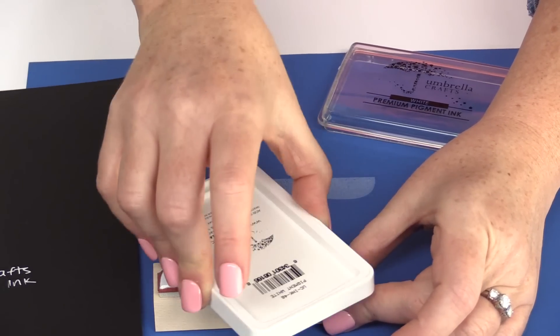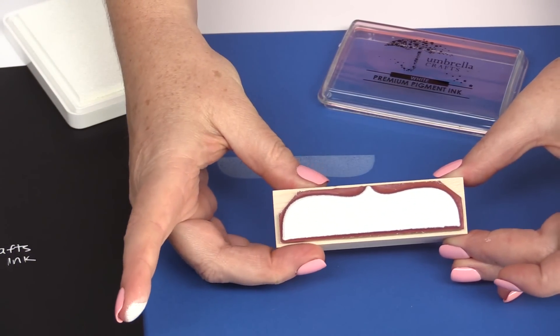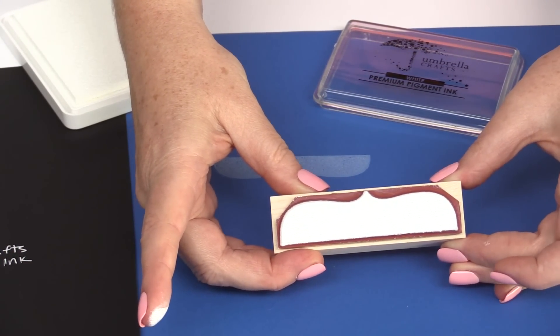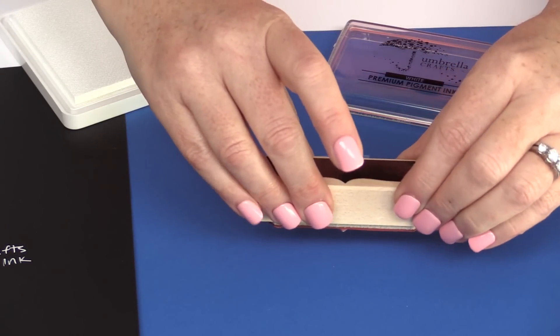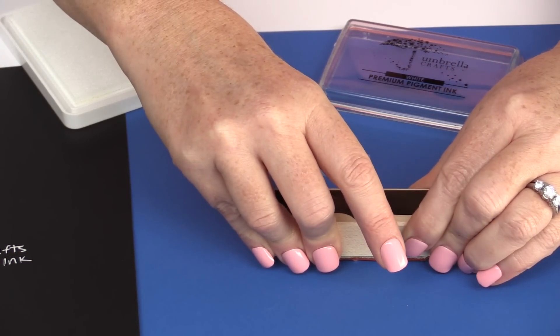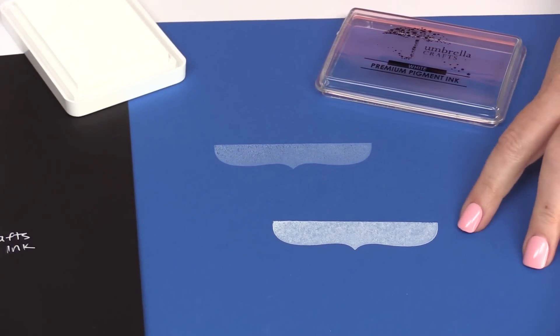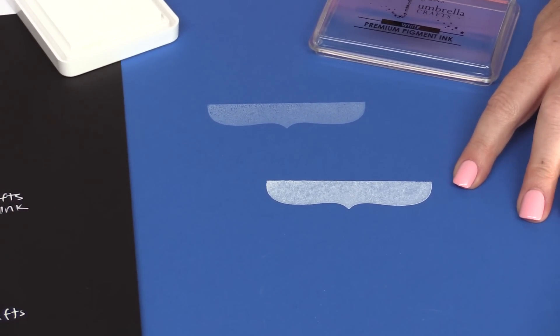You can see you can't really see any of the stamp through that ink. It really is opaque. So when we stamp with that, you get a nice bright white crisp finish.